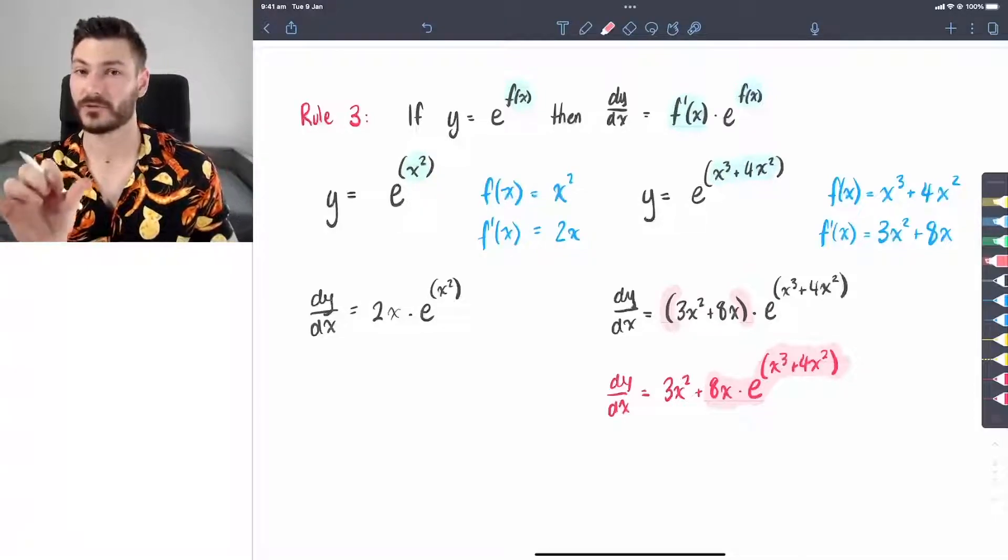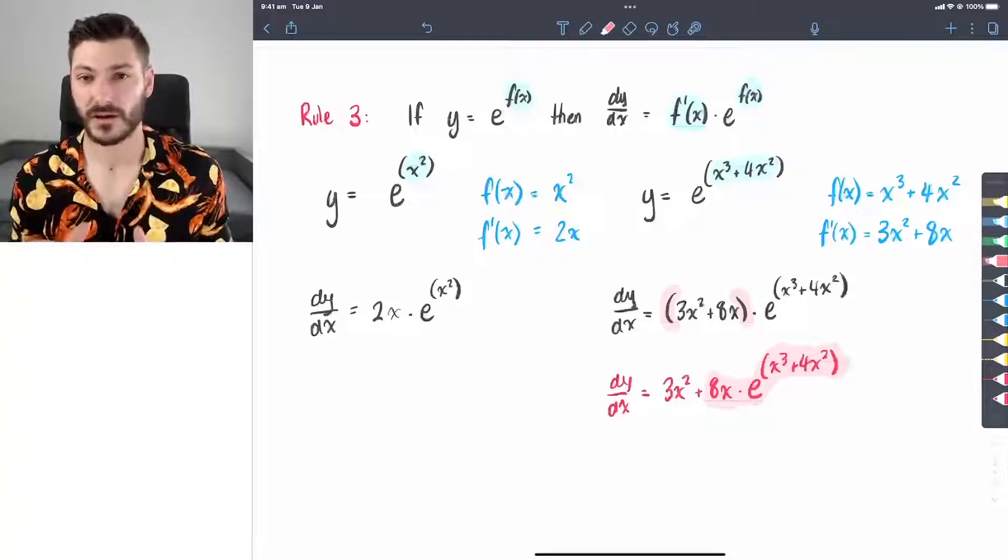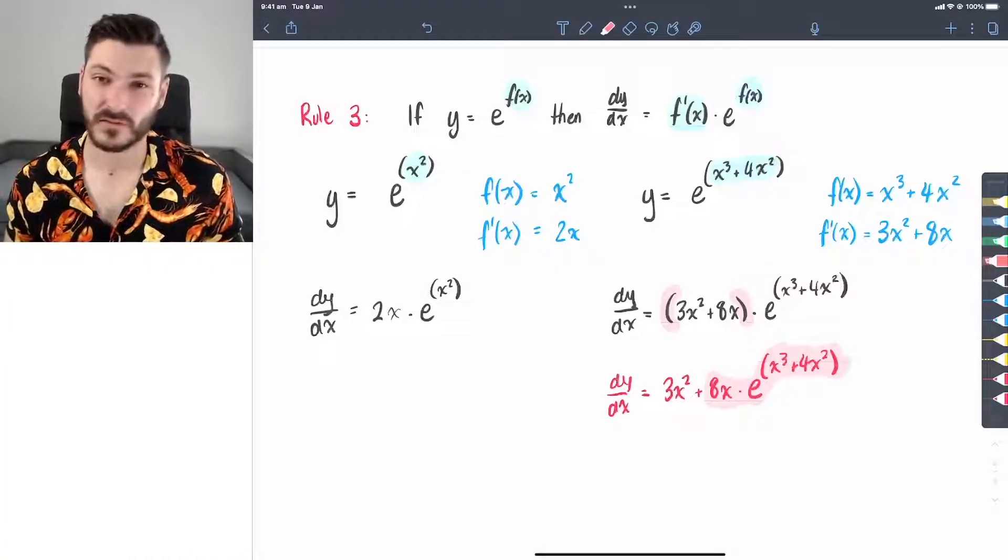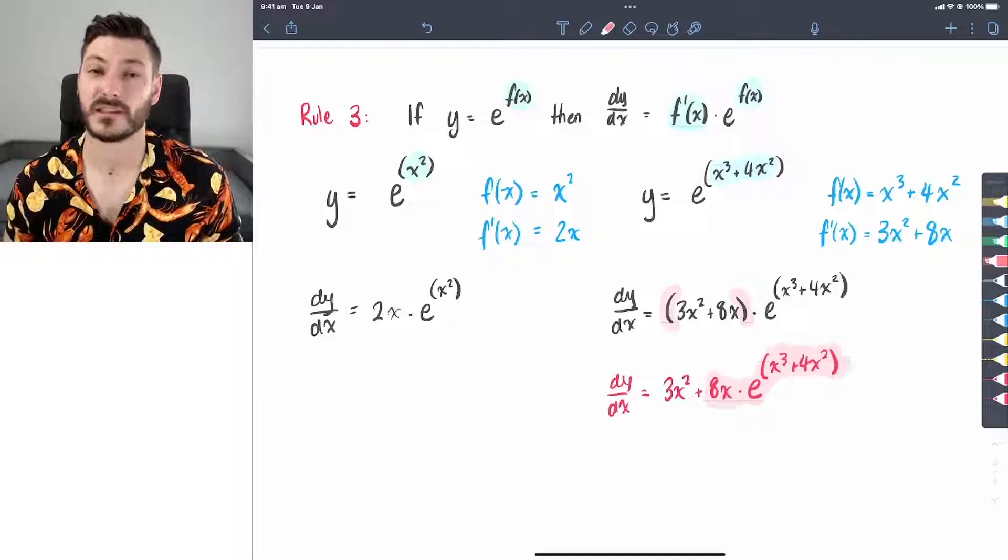We want the entire derivative, f dash x, to multiply by the original function. So when you find that derivative, make sure you just put it in brackets out the front or parentheses out the front to ensure you're multiplying by the entire thing.